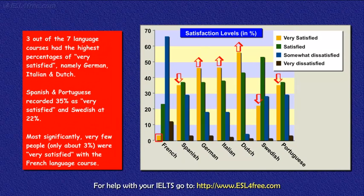3 out of the 7 language courses had the highest percentages of Very Satisfied, namely German, Italian and Dutch. Spanish and Portuguese recorded 35% as Very Satisfied and Swedish 22%. Most significantly, very few people, only about 3%, were Very Satisfied with the French language course.